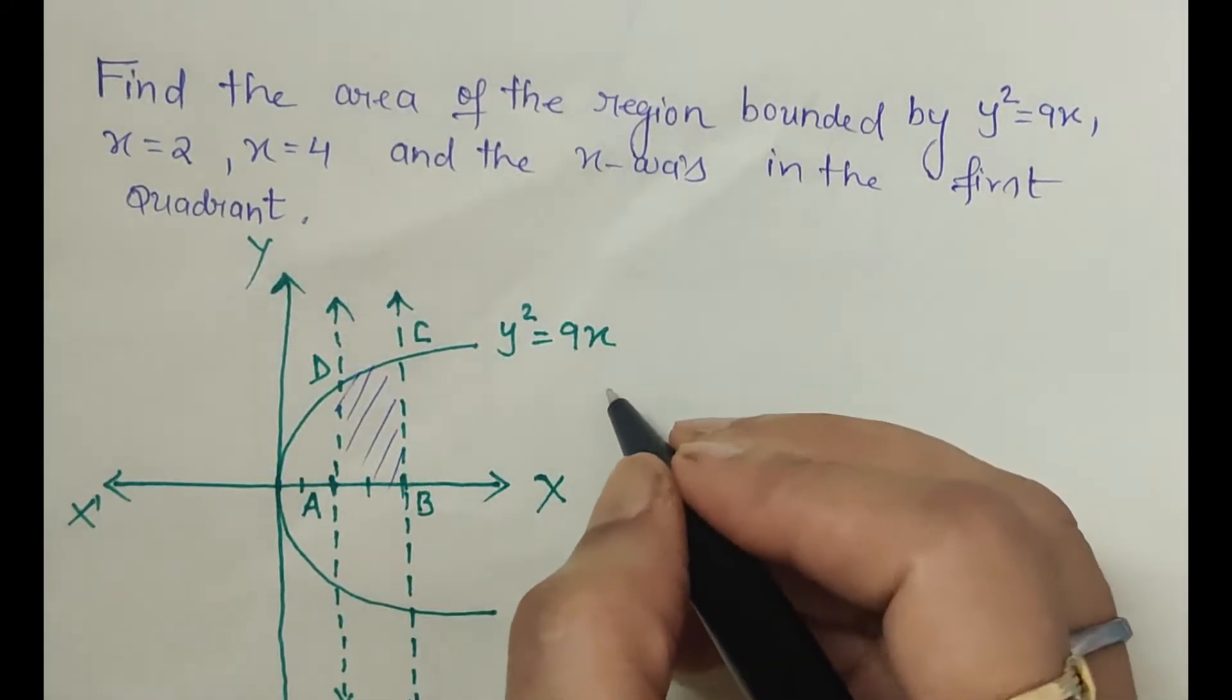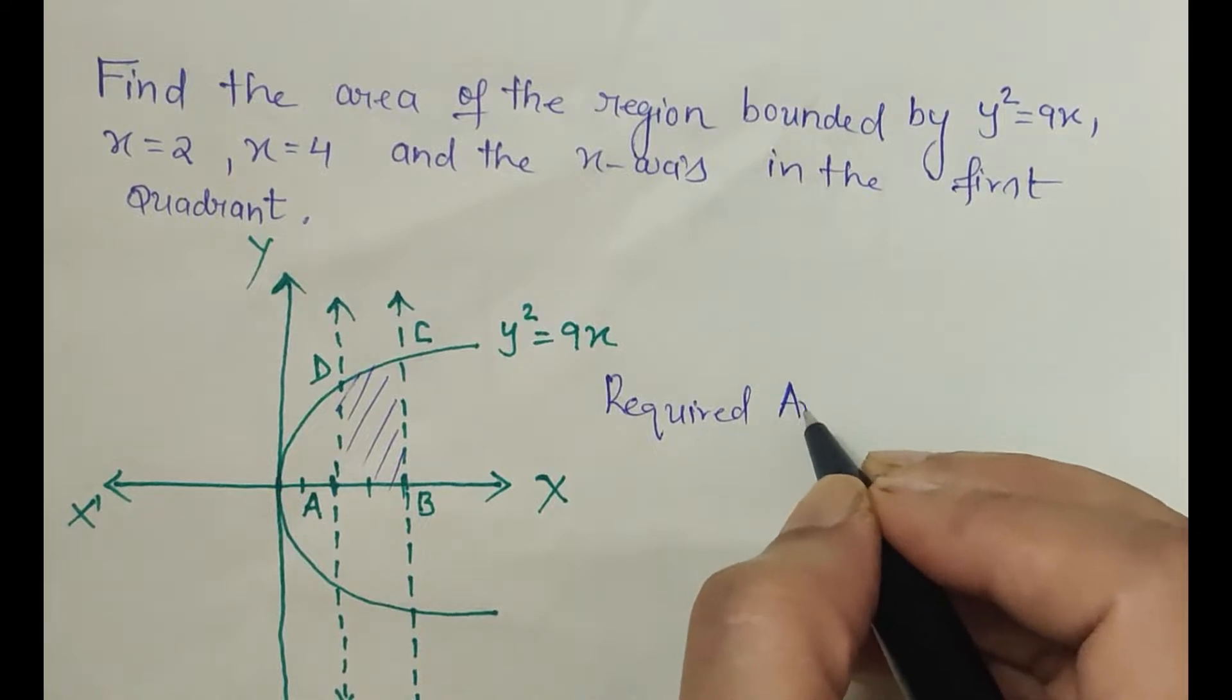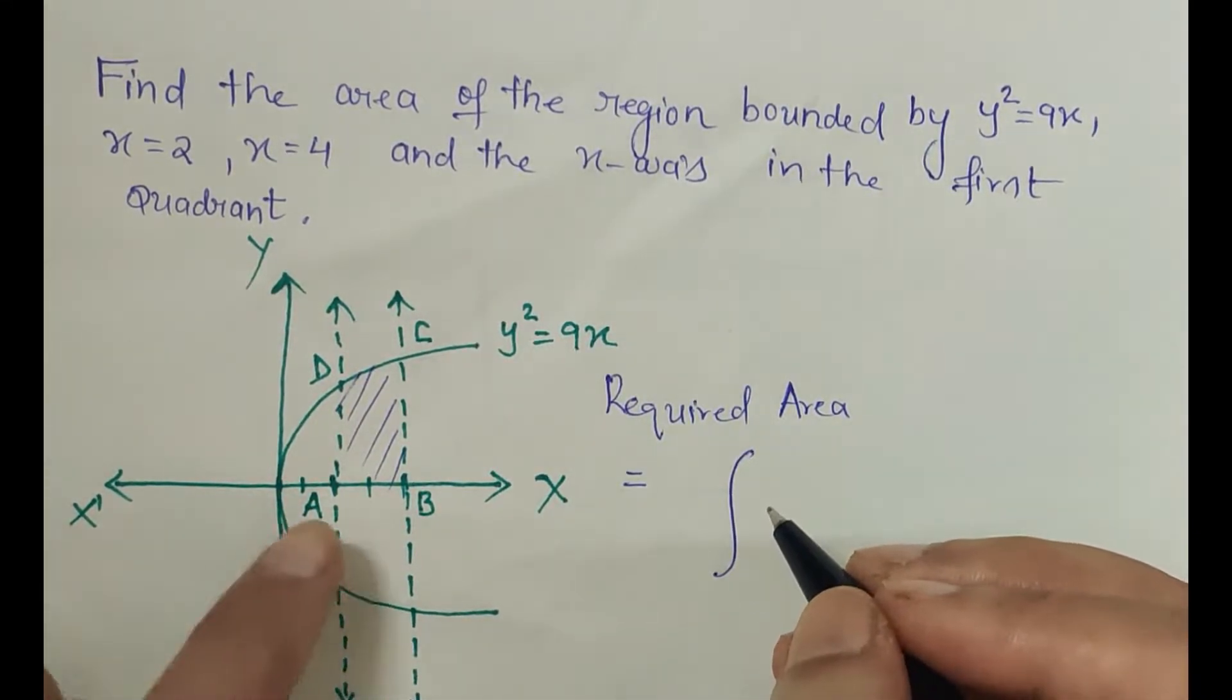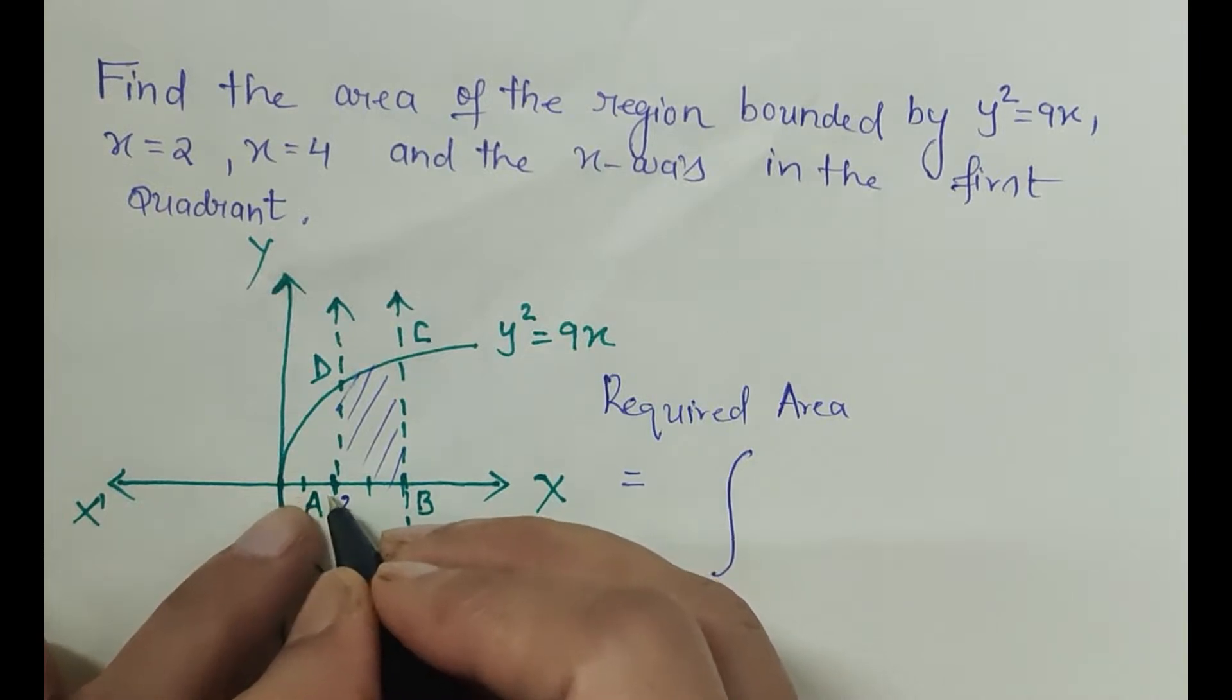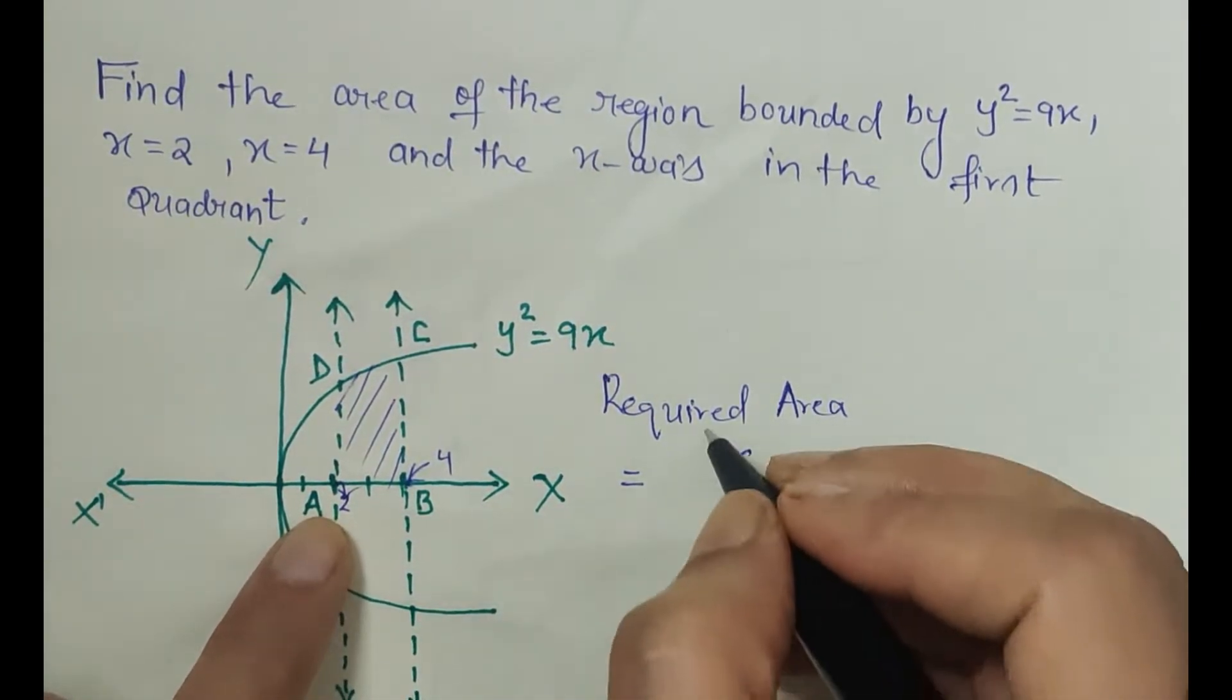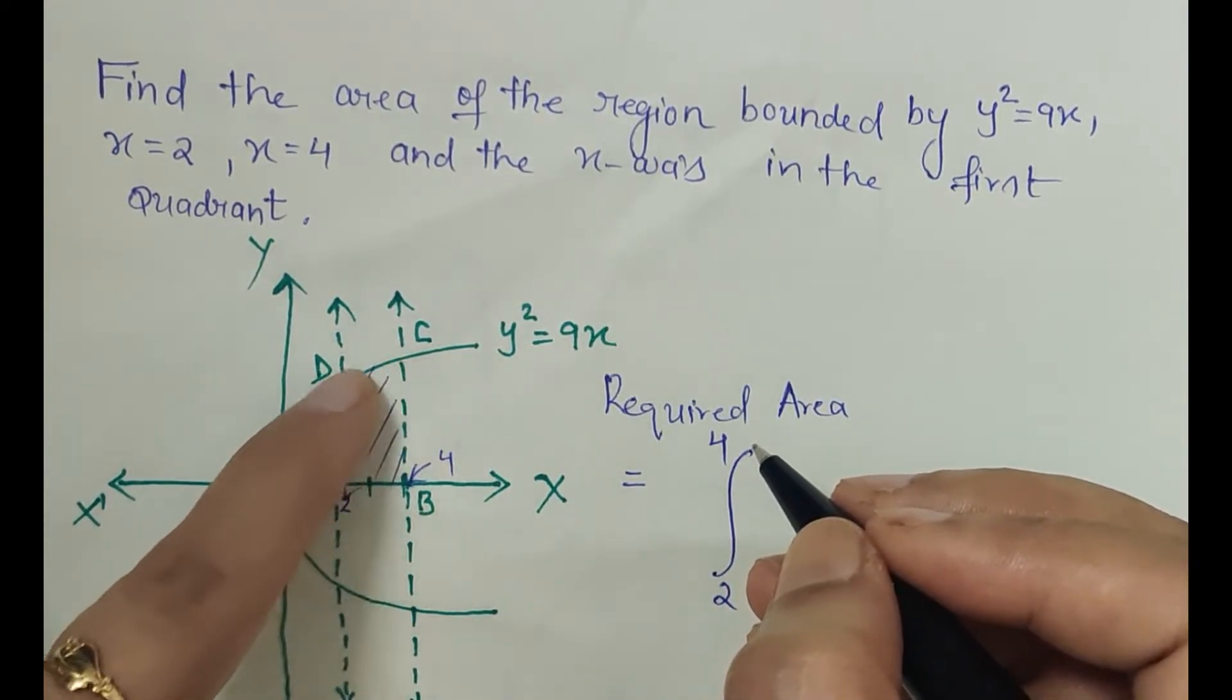So let us find it. So the required area is equal to the integral from x = 2 (this is 2) to x = 4 (this is 4), and the equation of this curve is parabola.